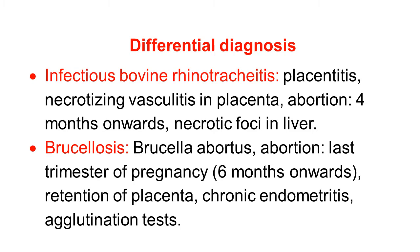Friends, we discuss the differential diagnosis of bovine genital campylobacteriosis. Campylobacteriosis causes abortion; similarly, there are a few infectious diseases that also cause abortion. One important disease is infectious bovine rhinotracheitis, which presents with placentitis, necrotizing vasculitis in the placenta, abortion from the fourth month onwards, and necrotic cotyledons.